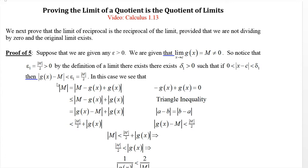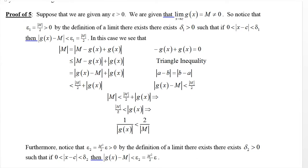This |g(x) - m| we just showed is less than epsilon_1 = |m|/2. So we have |m| < |m|/2 + |g(x)|. Subtracting |m|/2 from both sides gives (1/2)|m| < |g(x)|. Taking reciprocals reverses the inequality: 1/|g(x)| < 2/|m|.